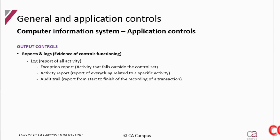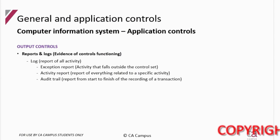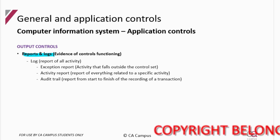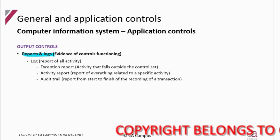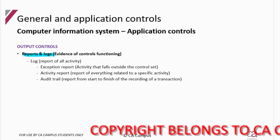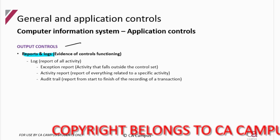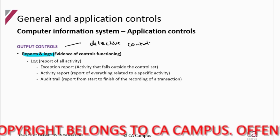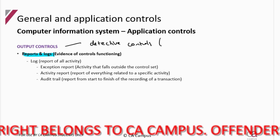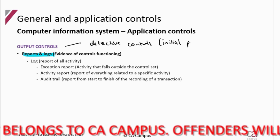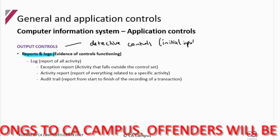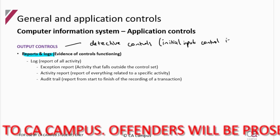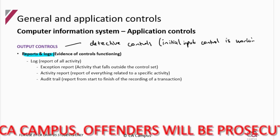Our output application controls are essentially logs and reports, which are evidence about whether a control was functioning or not. Ultimately, these controls are considered detective controls — they are there to detect if the initial input control is working or not.